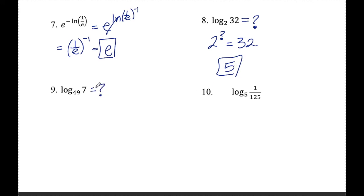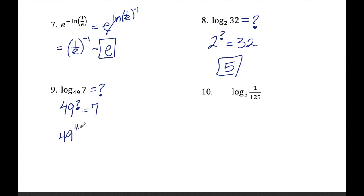Number nine: same idea. If I write this as an exponential, this would be 49 to the something equals seven. In order to raise something to an exponent and end up with a smaller number, this exponent needs to be a fraction — if it's 49 squared or cubed, that number gets bigger. The only fractional exponent that works here is 49 to the half, because that's the same thing as the square root of 49, which is seven. So the answer is one half.